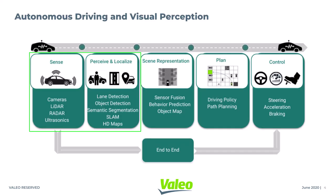Sensing, perception and localization, scene understanding, planning and control can be considered as the five pillars of autonomous driving, with perception being the most complex and computationally expensive one.